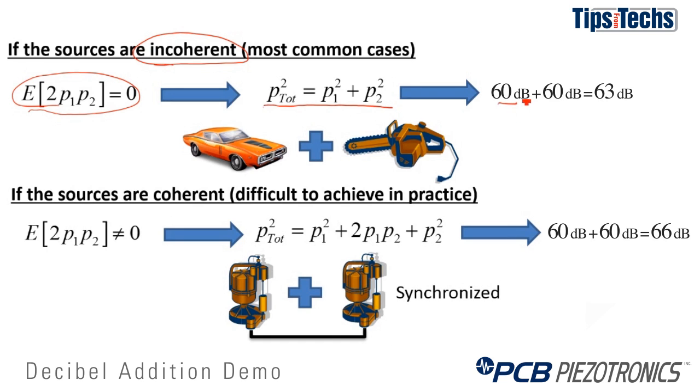If we have two sources of the same level, say 60 dB plus 60 dB, the result will be 63 dB. So we get a 3 dB doubling per doubling of sources.